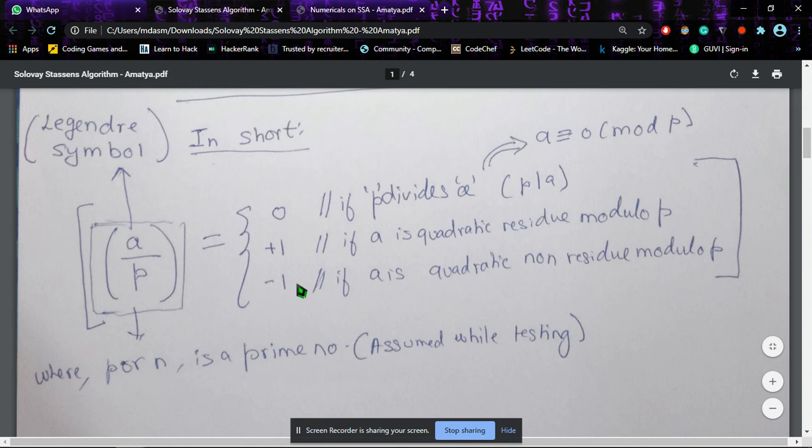The third condition is minus 1 if a is a quadratic non-residue modulo p, where p, or n, is a prime number. So if it satisfies these conditions, then a/p is known as the Legendre symbol.